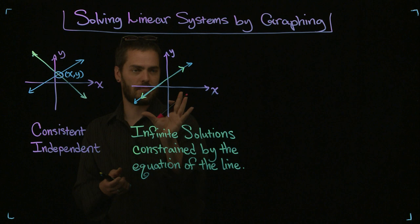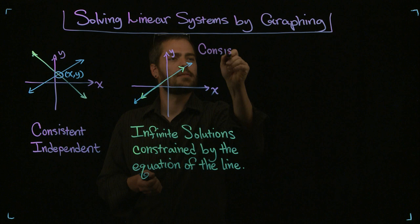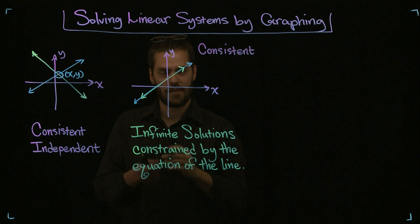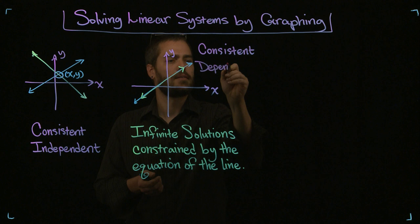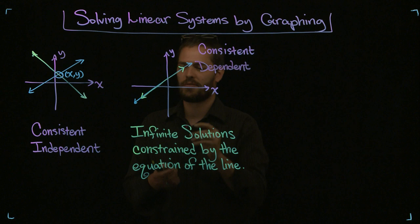There are a couple more vocabulary terms. Just like this consistent and independent, we can say that this system is consistent. Again, meaning that there is a solution. In this case, there are infinite solutions. But we're also going to say dependent. And in this case, dependent is referring to the fact that they are the same line.